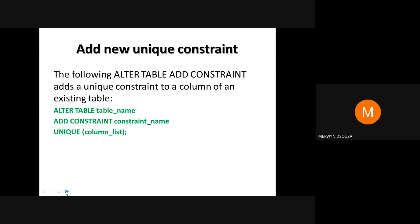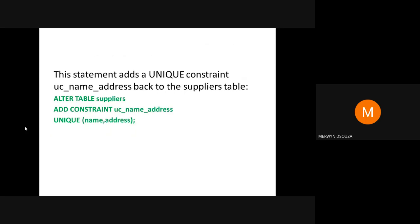To add a new constraint back to the table, use ALTER TABLE with the ADD CONSTRAINT clause. The syntax is: ALTER TABLE table_name ADD CONSTRAINT constraint_name UNIQUE (column_list). For example, to re-add the constraint to the suppliers table: ALTER TABLE suppliers ADD CONSTRAINT uc_name_address UNIQUE (name, address).